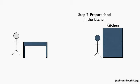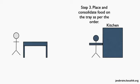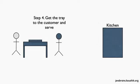Step two, he has to take the order to the kitchen and prepare the food. Note that this is just a one-man restaurant — there are no other employees so he has to do all the roles himself. He cooks the food and when it's completely cooked, he places and consolidates the food on the tray as per the order, since there could be different elements of food that an order comprises. That consolidation is step three. And then finally, step four is to get the tray to the customer and serve the food.